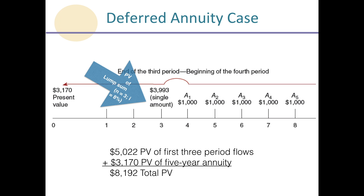Let's look at that on a timeline. The present value of our annuity stream at the end of the third period, or the beginning of the fourth period, is three thousand nine hundred ninety-three dollars. But we don't want to know what that annuity is valued at at the end of year three — we want to know what it's valued at today. So we need to find what we would have to invest today to start withdrawing a thousand dollars per period beginning in year four. Now that we've found that lump sum value at the end of year three, we can discount that amount back to today.